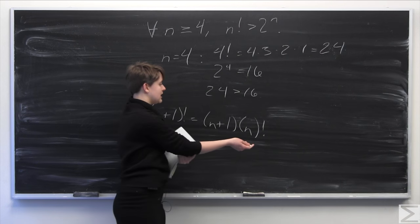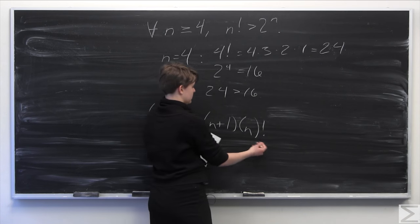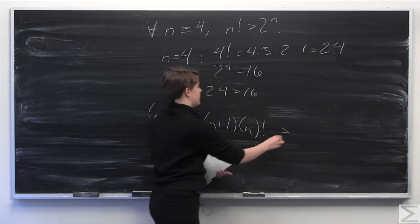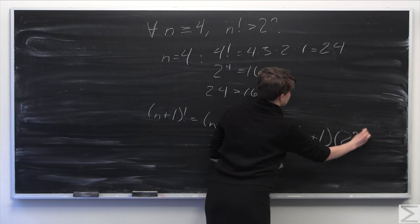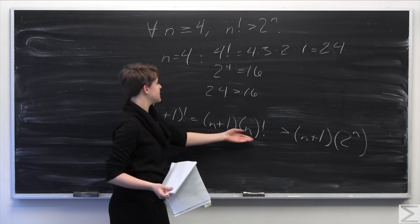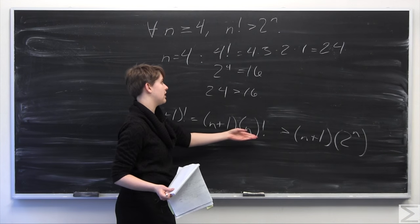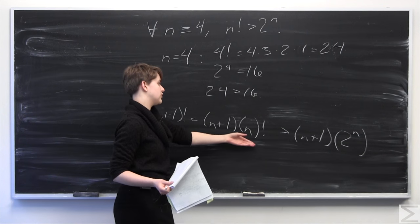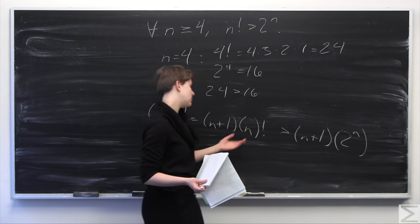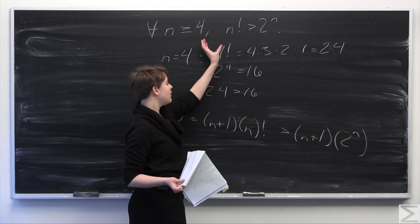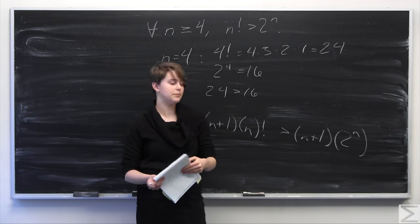that n factorial is greater than or equal to 2 to the n. That was what we assumed from the beginning. So therefore, we can make this inequality here, n plus 1 times n factorial. We can say this is greater than n plus 1 times 2 to the n, because n factorial is greater than 2 to the n. Another way of thinking about that would just be multiplying both sides of this inequality here by n plus 1.